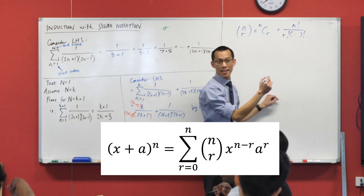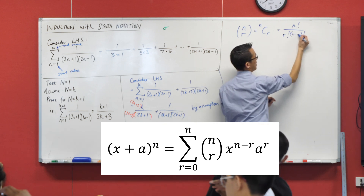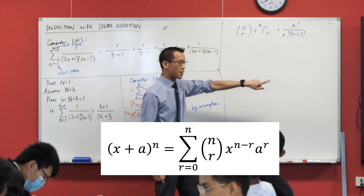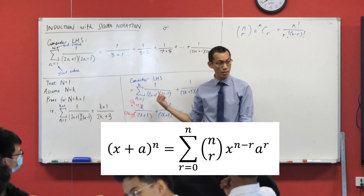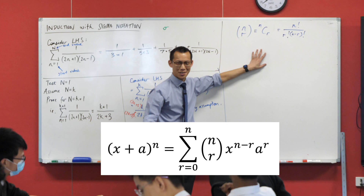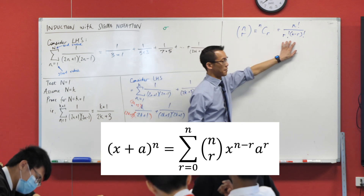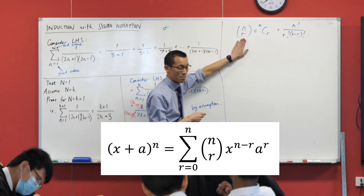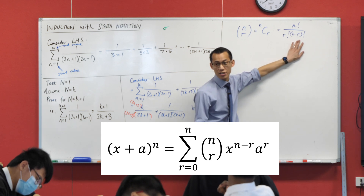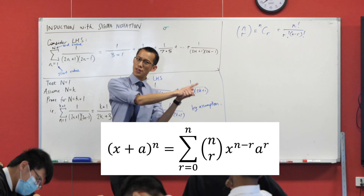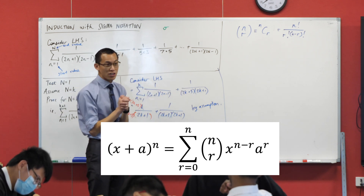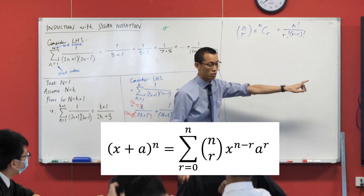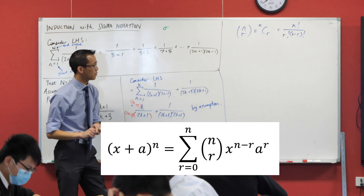r factorial and then n minus r factorial — fantastic. Now I'm going to give you two big clues. I'm going to ask you to set out trying to prove this by induction, just like we did here. Clue number one: this factorial notation is quite long — it takes something dramatically simple and expands it out. You absolutely need to know what's behind the binomial coefficient, but for this proof, to save time, you don't actually need to expand everything out into factorials.